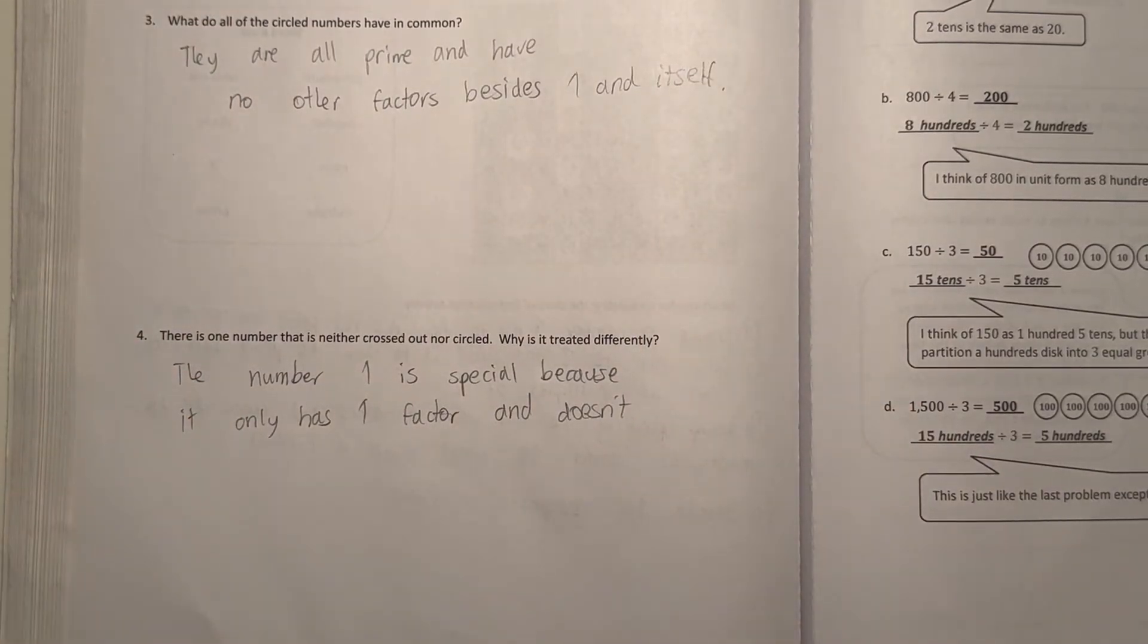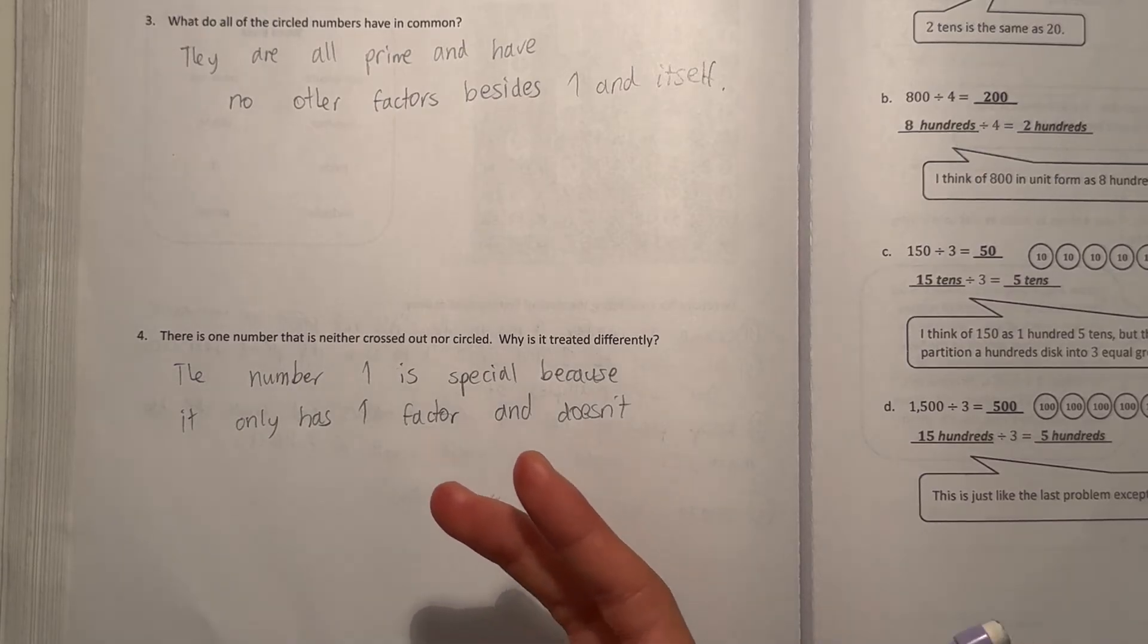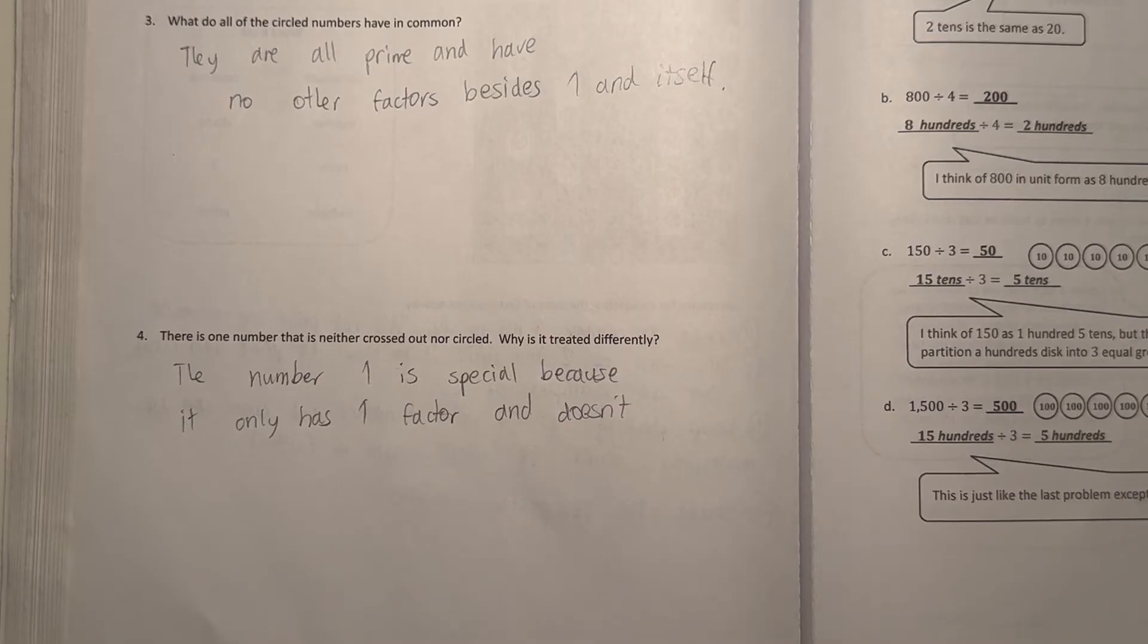So it only has one factor. So if a number is prime, it only has one and the number itself. So meaning, therefore, a prime number has two factors. But then the number one, it's only one times one. So one only has one factor. So it's not prime. But it's also not composite because it doesn't have more than two factors. Because to be composite, you need multiple factors.